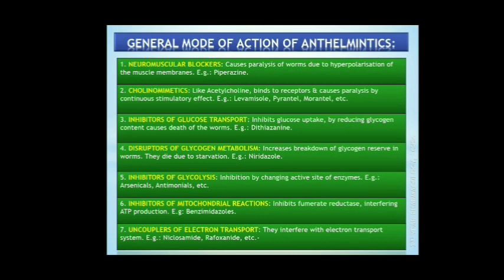Fifth, inhibitors of glycolysis: arsenicals, thiacetarsamide, antimonyls like potassium antimonyl tartrate, stibophen, etc. are organic trivalent heavy metals that bind with sulfhydryl groups to change the structure of proteins and active sites of enzymes. Sixth, inhibitors of mitochondrial reactions: benzimidazoles and thiophanate work in this way. For muscle contraction in worms, ATP is required, which is provided after reduction of fumarate to succinate in mitochondria. These drugs exert their action by inhibiting fumarate reductase. Seventh, uncouplers of electron transport: they interfere with the electron transport system and phosphorylation process, decreasing ATP generation, and the worms die. Niclosamide and rafoxanide are some examples.